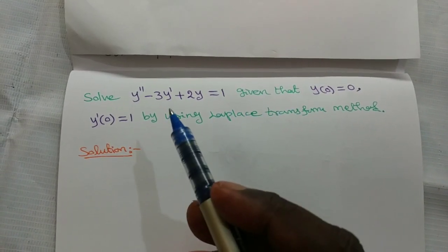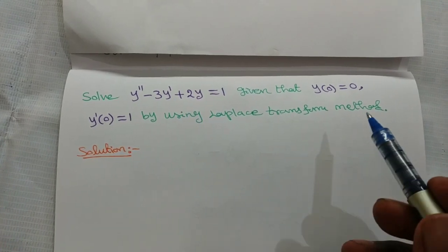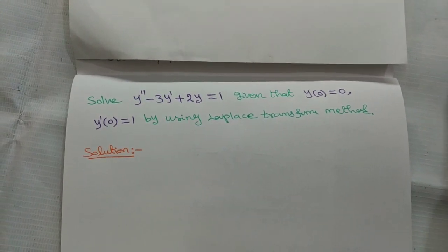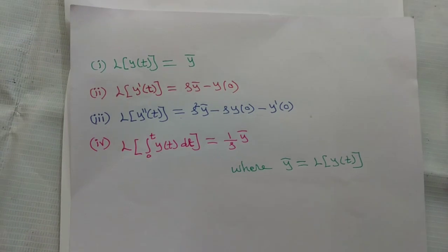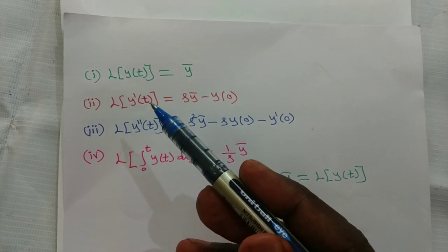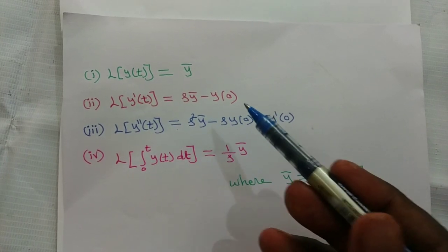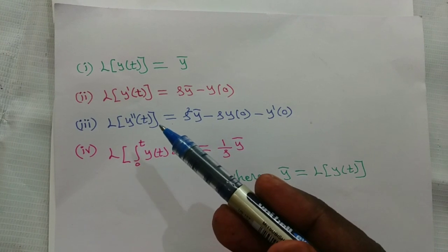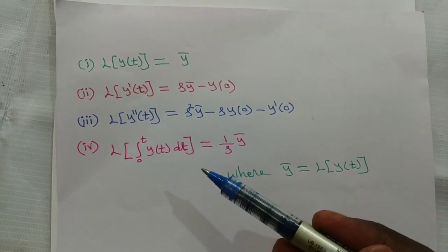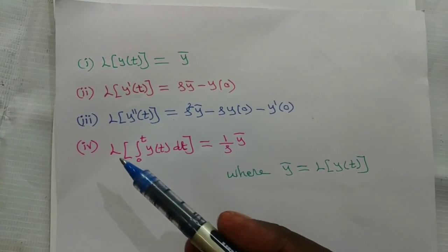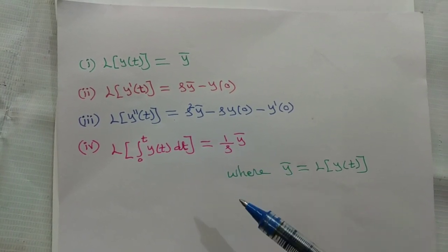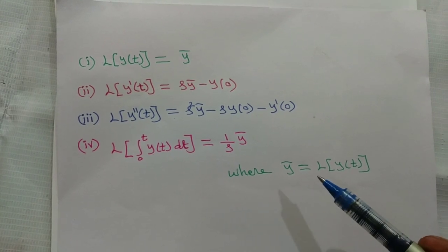To solve this differential equation using Laplace transform method, we need the formulas: L of y of t equal to y bar; L of y dash of t equal to s y bar minus y of 0; L of y double dash of t equal to s squared y bar minus s y of 0 minus y dash of 0. And L of integral 0 to t of y of t dt equal to 1 by s times y bar, where y bar is equal to L of y of t.